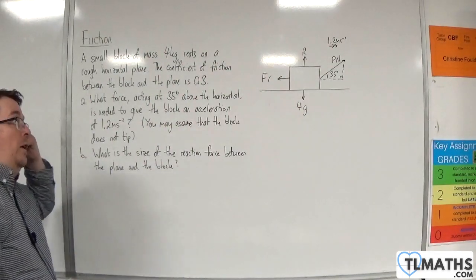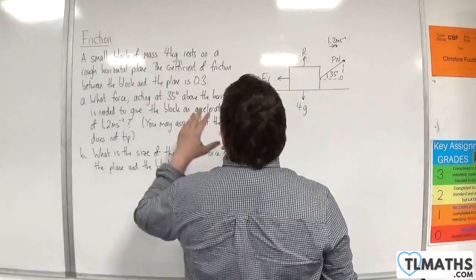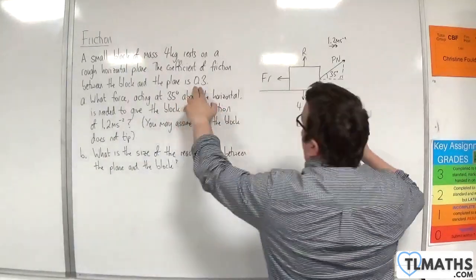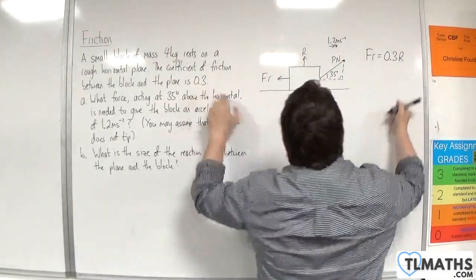Okay, so we know that the block is moving and the coefficient of friction is 0.3, so the friction is equal to 0.3 times R.